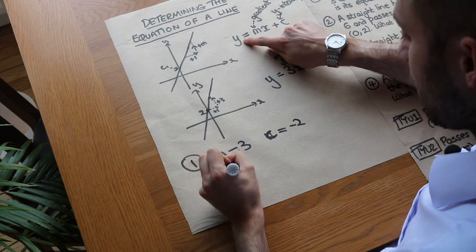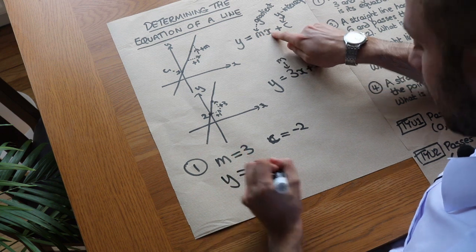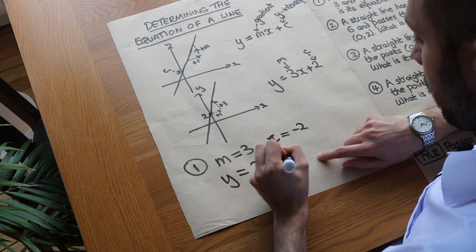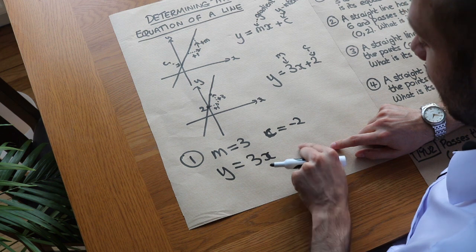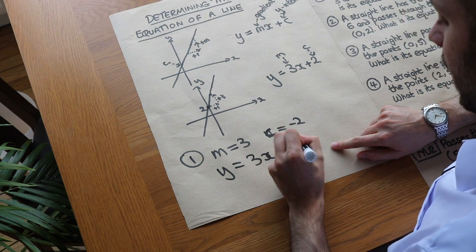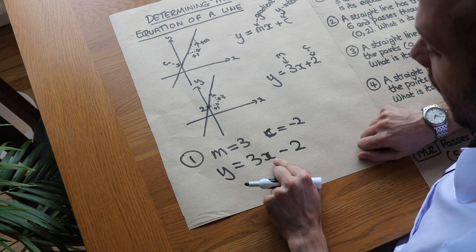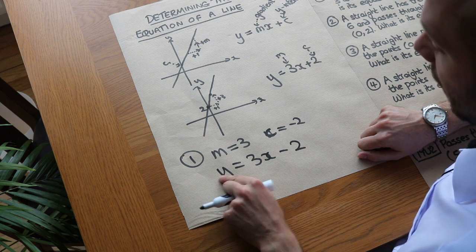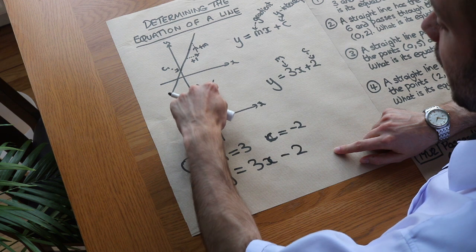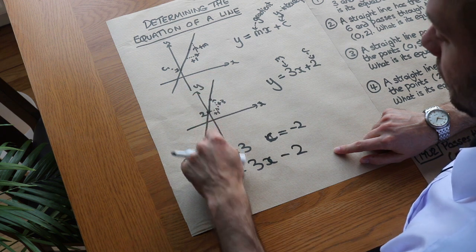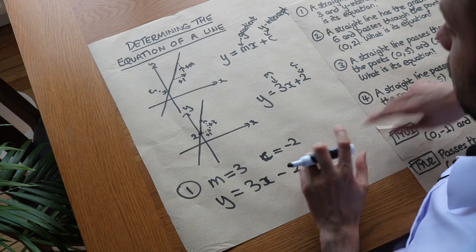Well, we can just substitute m and c into the equation. So we've got y equals 3x plus minus 2. But remember, when we write plus negative 2 we could also write that as just minus 2. And x and y need to remain as variables because as you go across the line the x and y values can vary, even though the gradient and y-intercept are fixed.